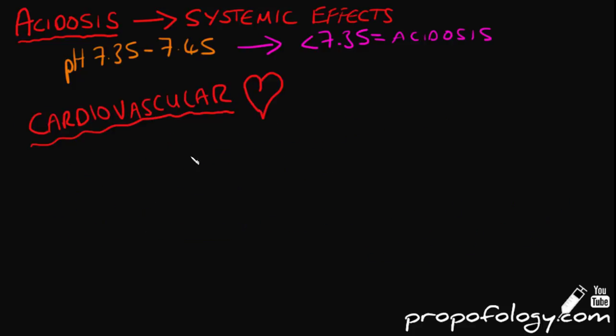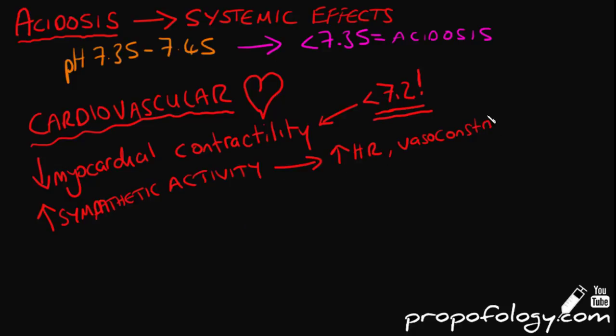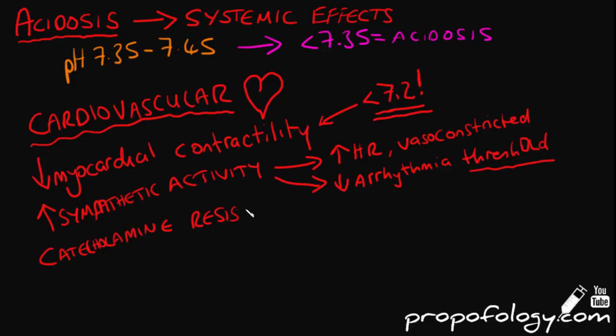Acidosis will cause depression of myocardial contractility, and this effect predominates at a pH less than 7.2. Sympathetic overactivity will cause a tachycardia, vasoconstriction, and a decreased arrhythmia threshold. You're much more likely to have arrhythmias with an acidosis. Resistance to the effects of catecholamines like noradrenaline and adrenaline occur when the acidemia is very severe.